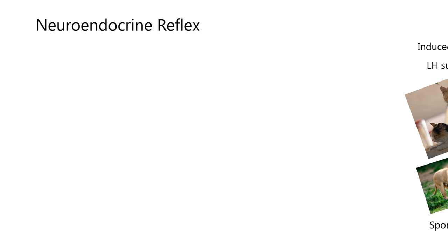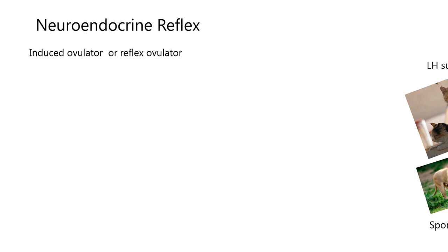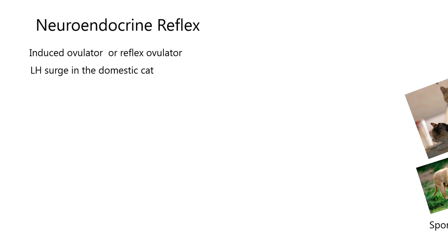The neural endocrine reflex I would like to talk about is in the cat. The cat is referred to as an induced ovulator, or reflex ovulator. The domestic cat will not ovulate until mating occurs and triggers this neural endocrine reflex, producing an LH surge. For all mammals, basically, there has to be an LH surge to cause ovulation.